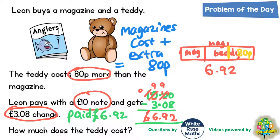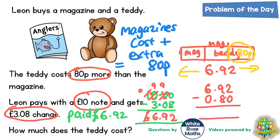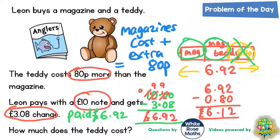The obvious thing to do is take off the 80p from the total of £6.92. So if we take off 80p from £6.92: 2 take away 0 is 2, 9 take away 8 is 1, 6 take away 0 is 6 — that tells us £6.12. Now that we've knocked the 80p off, if you knock the 80p off from the teddy's cost it's the same as the magazine's cost. So we're left with the cost of the magazine plus the cost of the magazine again.